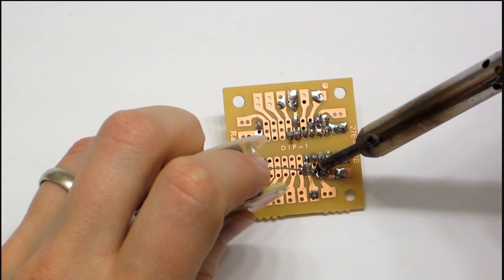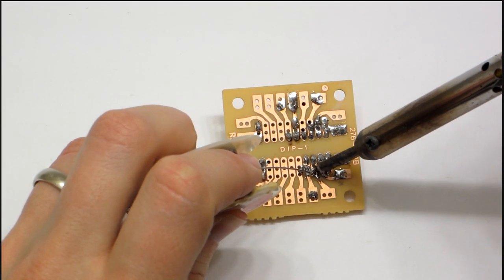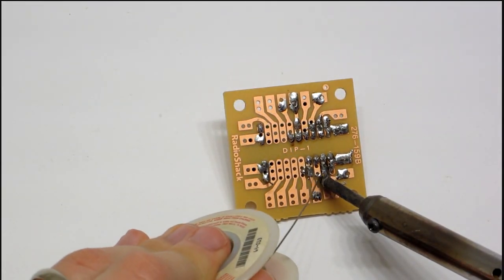From here on, it's a pretty straightforward soldering job. Try to keep all the components as low as possible to the board. This will help make it easier to cover later.